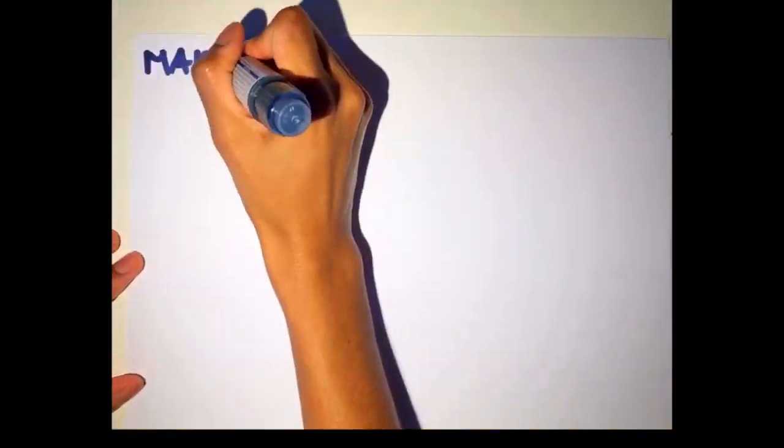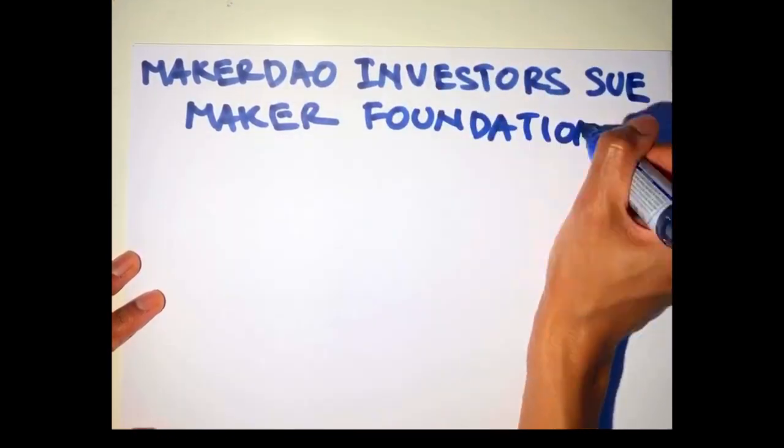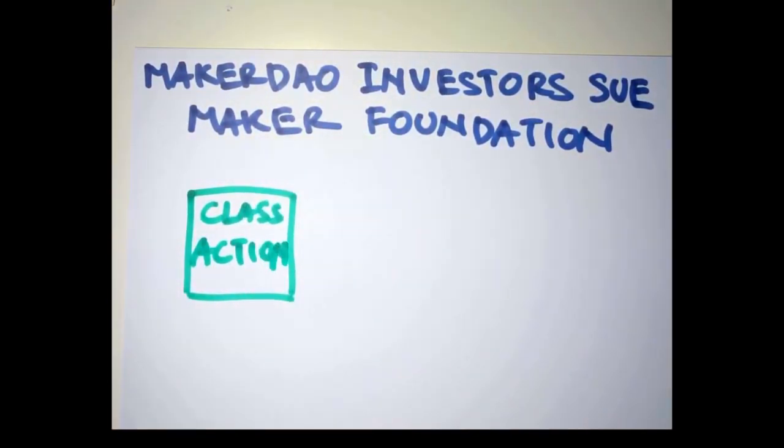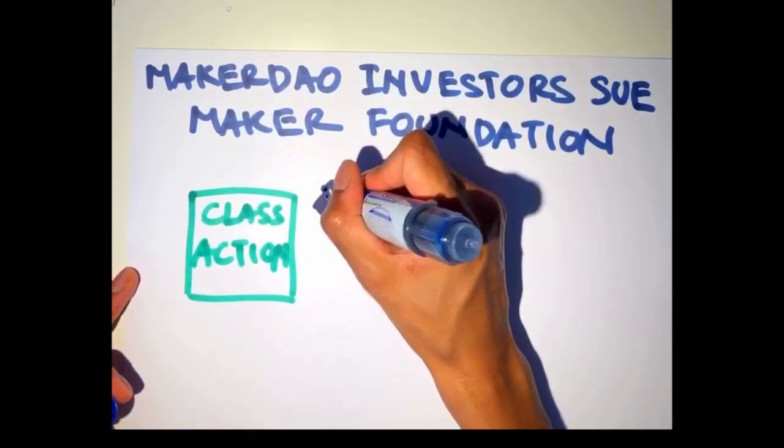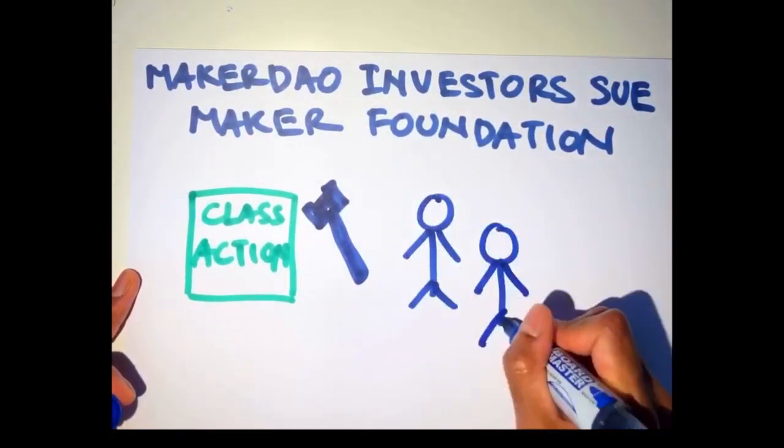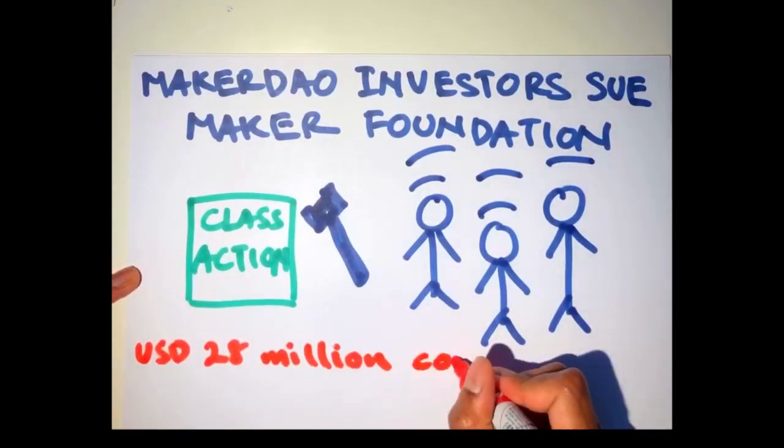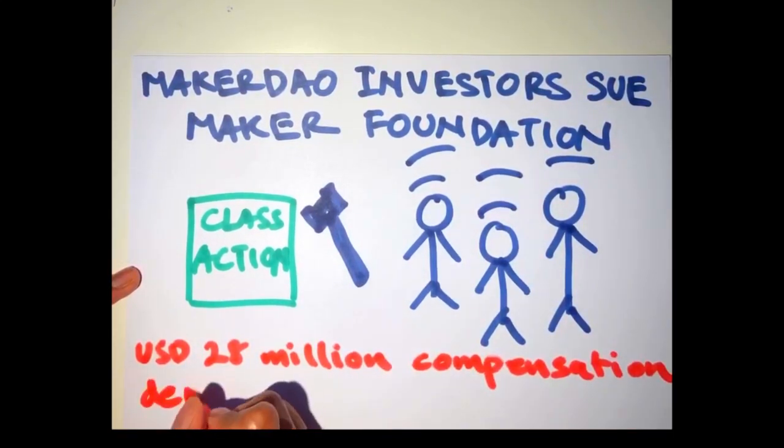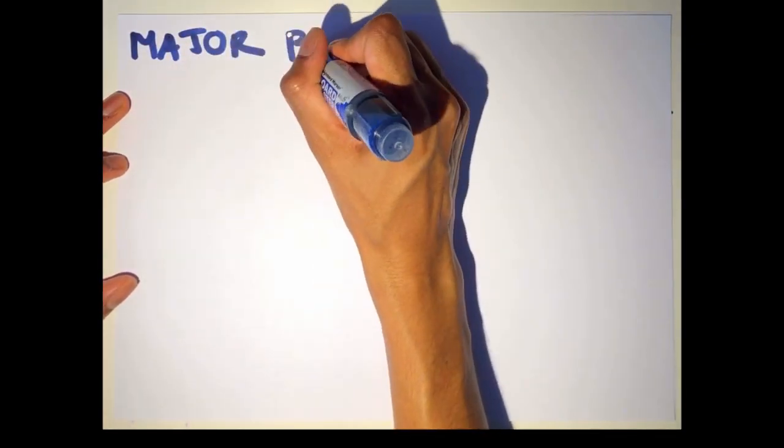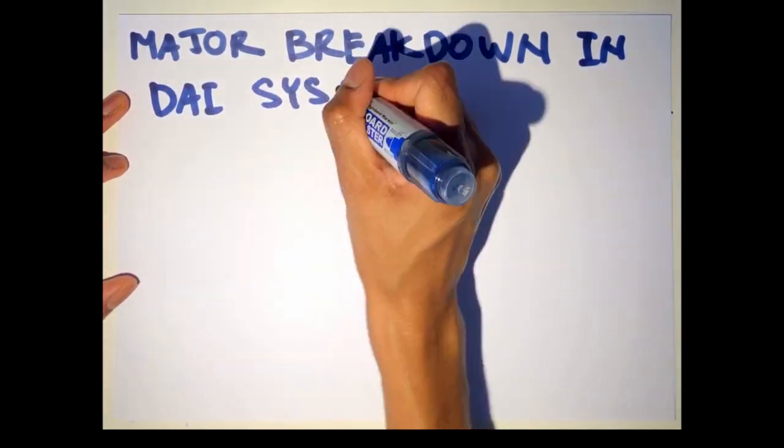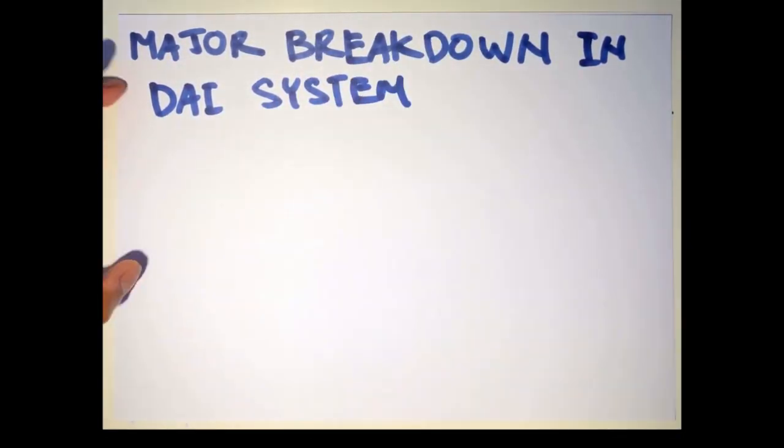However, the investors who lost 100% of their collateral were not compensated. A class action suit representing 3,000 investors has been filed against the Maker Foundation. The Maker investors are seeking $28 million in compensation. This goes to show that although MakerDAO protocol performed as intended, the human factor i.e. the keeper system had failed during the crash.